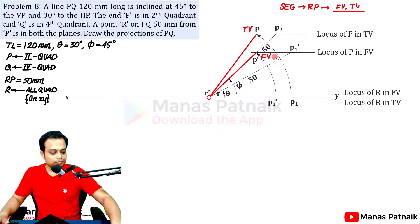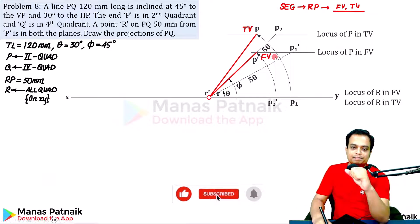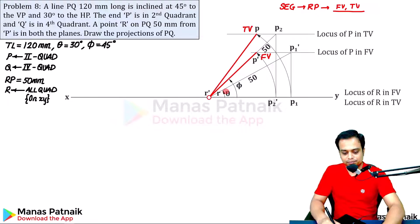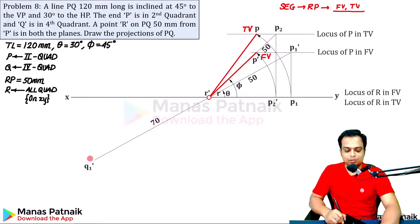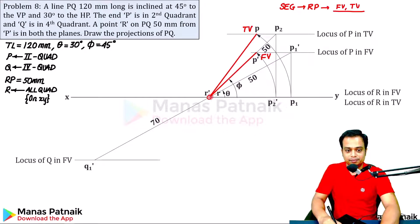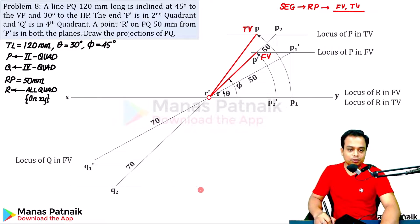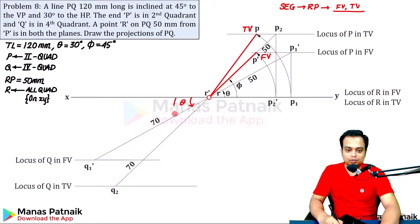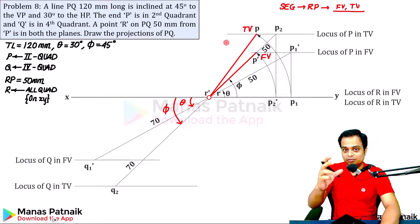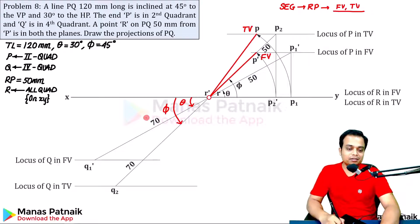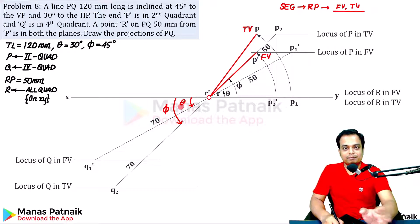Now repeat the same process for segment RQ in the fourth quadrant. The true length is 70 mm, so extend 70 mm from R downward — this gives the locus of Q in the front view. Extend 70 mm for the locus of Q in the top view. The angle theta and phi remain the same. We will repeat the same projection steps for the segment in the fourth quadrant.